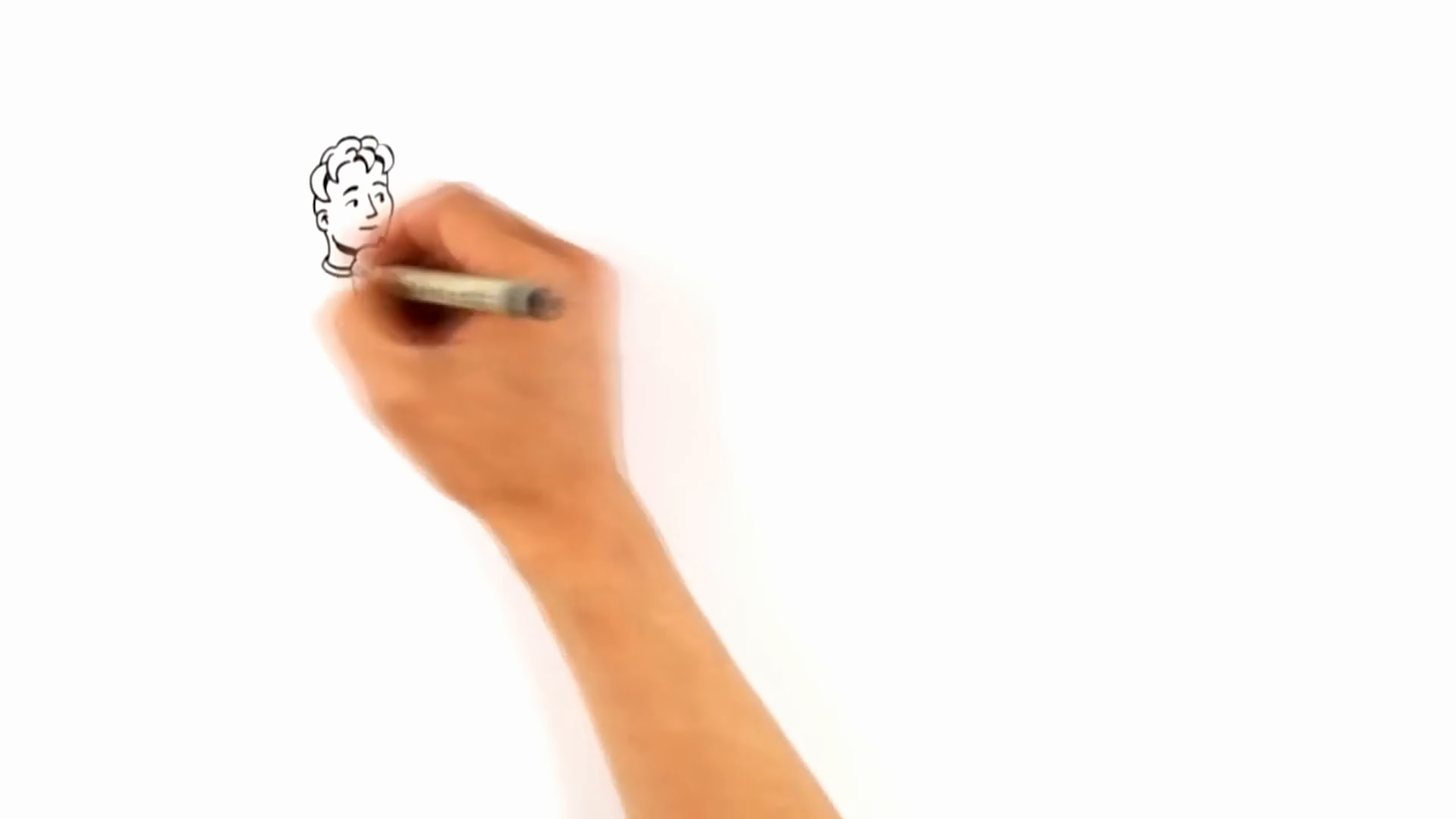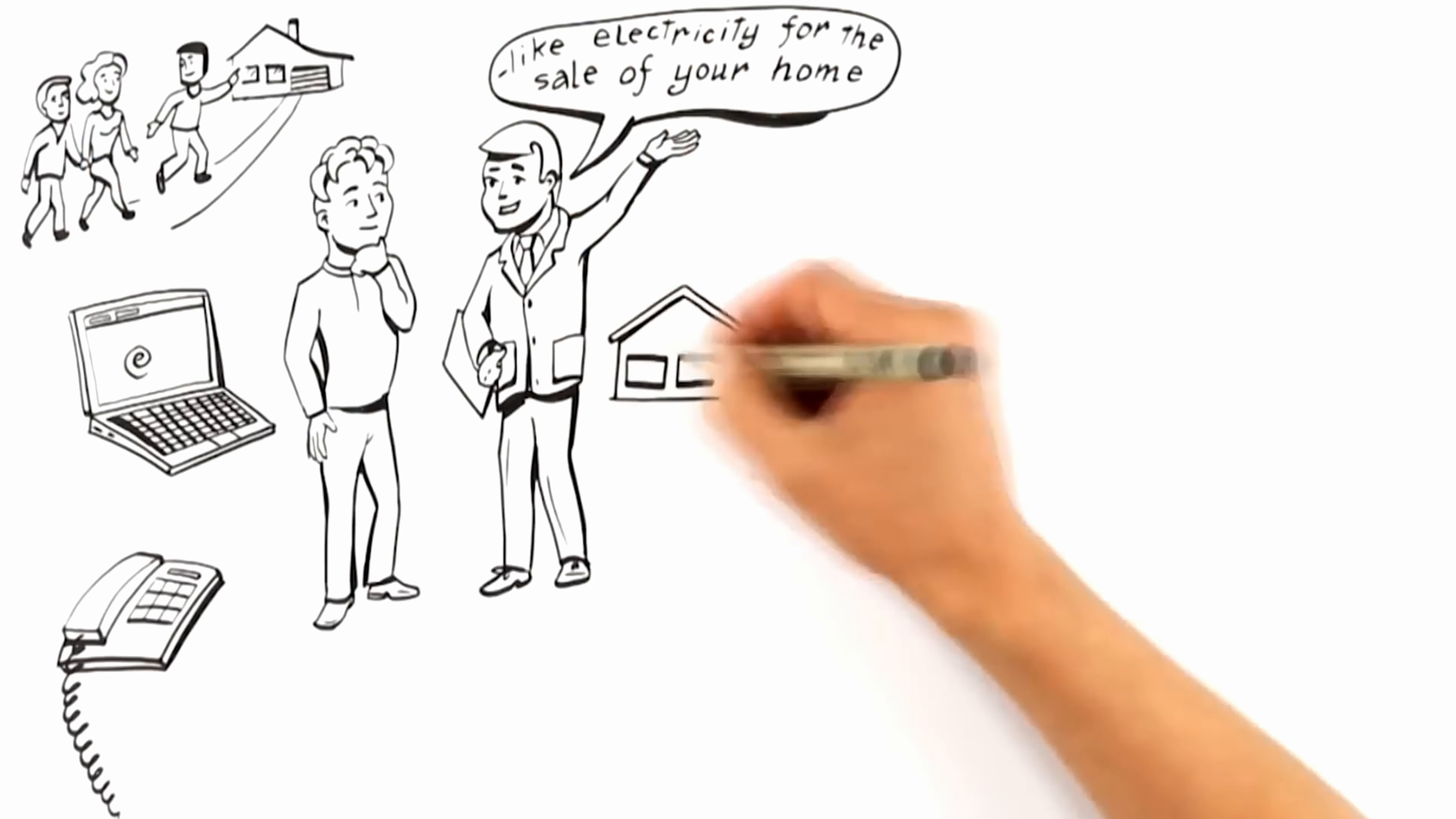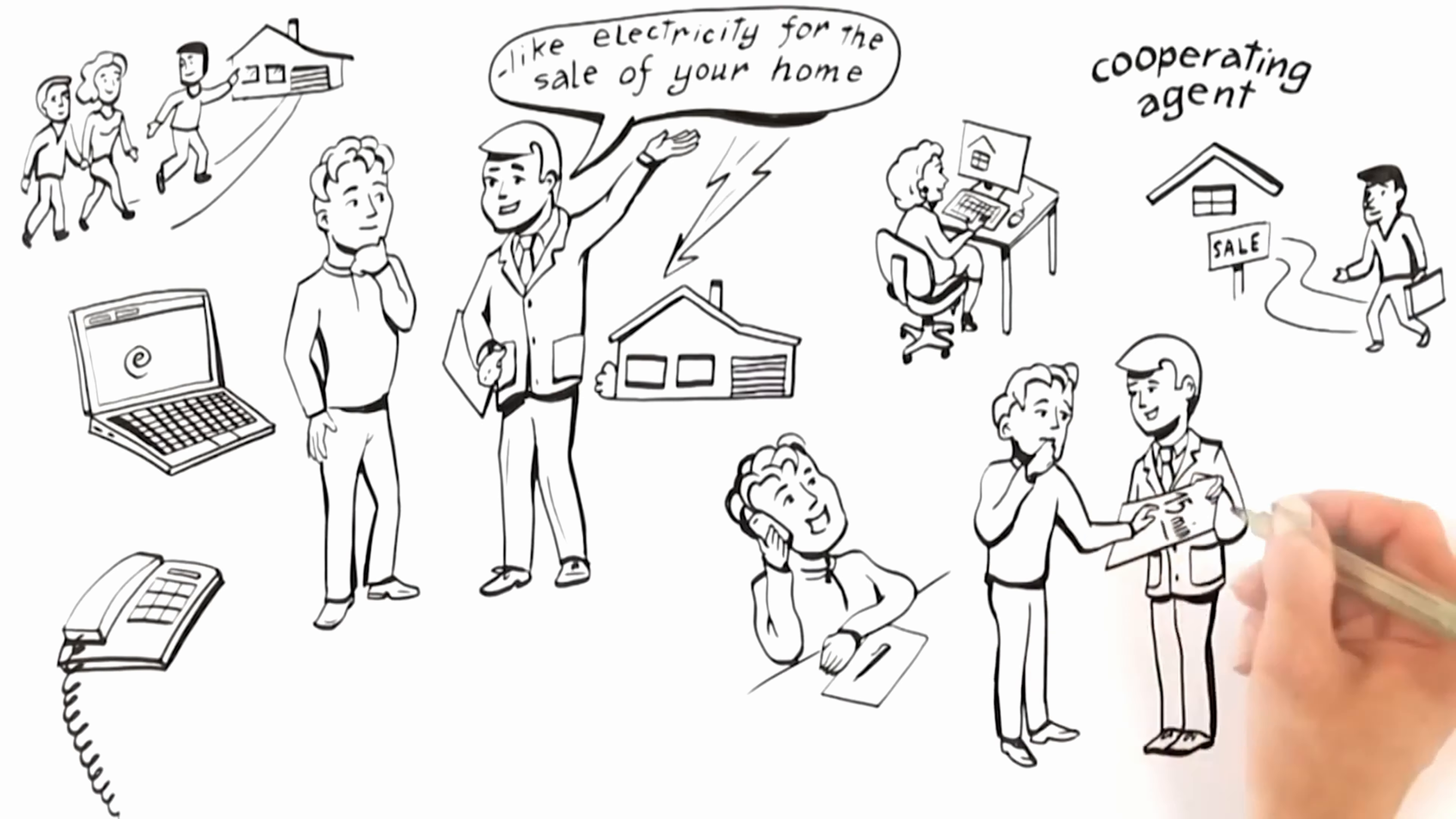Think of this like the circuit breaker in your house. Emails, calls, and showings are like electricity for the sale of your home. So without a system to process and qualify their flow, you risk shorting out a top dollar offer. Here's why. When a buyer visits your home online, a cooperating agent calls to set up a showing, or someone calls from your yard sign, studies repeatedly show the fastest response wins the deal. Anything more than 15 minutes lowers the chance of your agent making contact and decreases showing your home by up to 105 times.